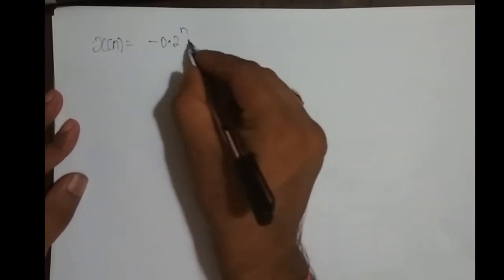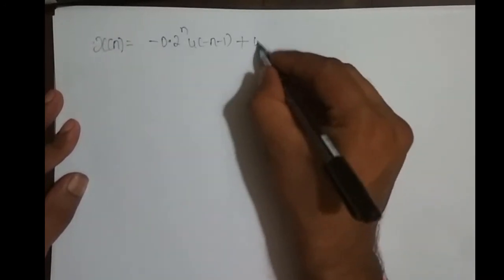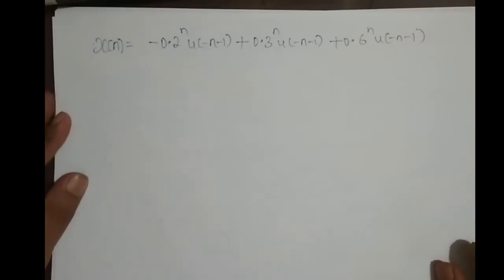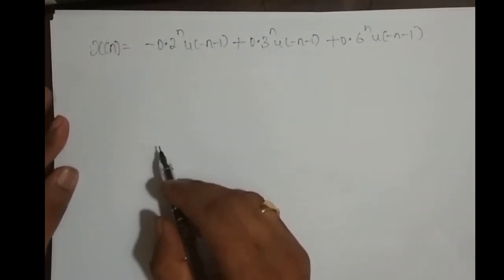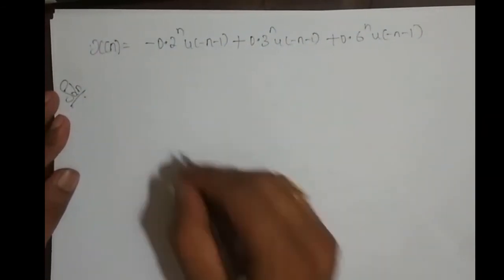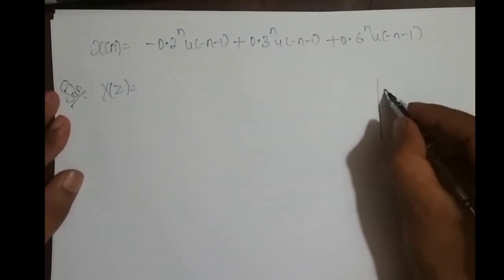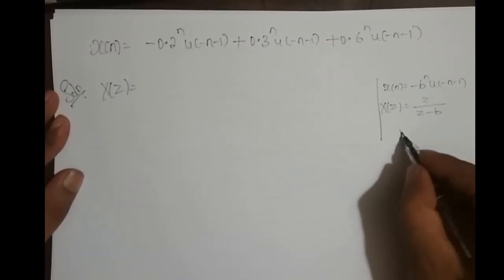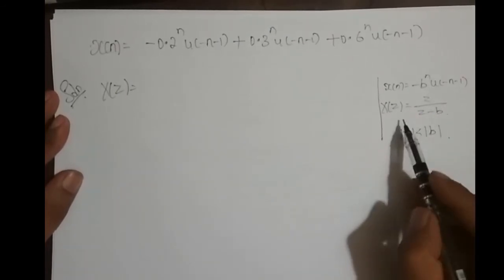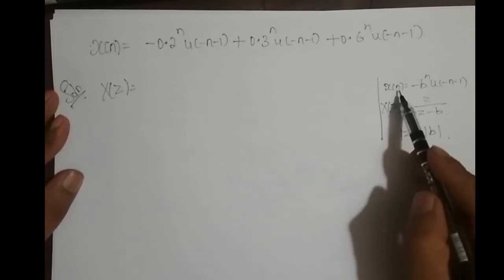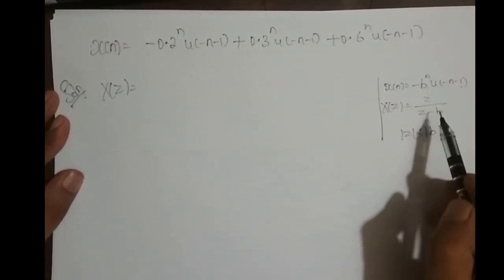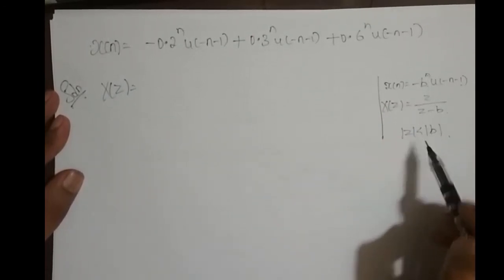Next example: x(n) = −(0.2)^n·u(−n−1) + (0.3)^n·u(−n−1) + (0.6)^n·u(−n−1). I want to find its Z-transform and ROC. We have the standard result: the Z-transform of −b^n·u(−n−1) is z/(z−p) with ROC |z| < |p|. Note that the Z-transform expression z/(z−a) is the same form as for a^n·u(n), but the difference is in the ROC: for u(n) it is outside the circle, and for u(−n−1) it is inside the circle.